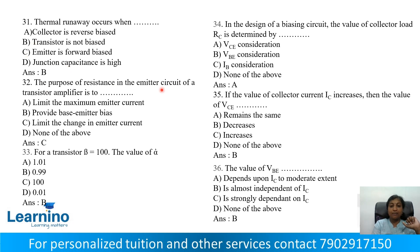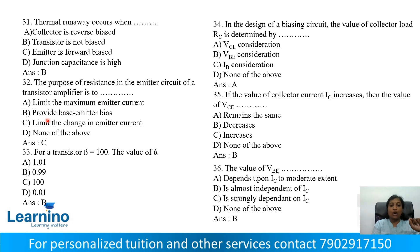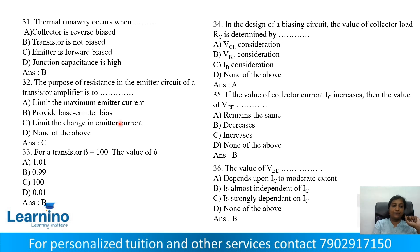Question number 32: The purpose of resistance in the emitter circuit of a transistor amplifier — Option A: Limit the maximum emitter current, Option B: Provide base-emitter bias, Option C: Limit the change in emitter current, Option D: None. Correct answer is to limit the change in emitter current, Option C.